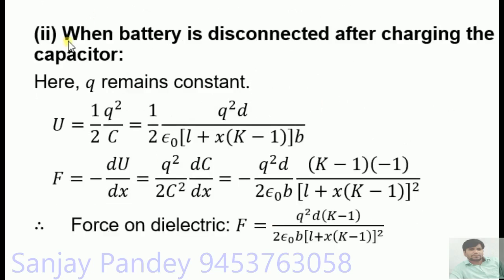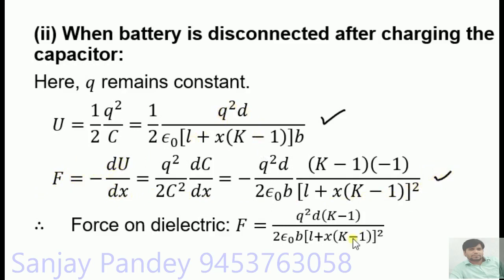Case 2: when the battery is disconnected after charging the capacitor. In this case Q is constant, and the potential energy is U = Q²/(2C). On substituting the value of C, we get the potential energy of the system. The force on the dielectric slab is F = −dU/dX, which on simplification gives the corresponding force expression for constant charge.